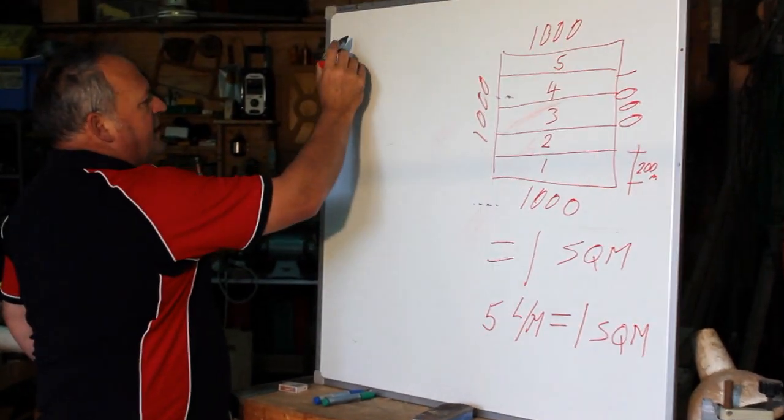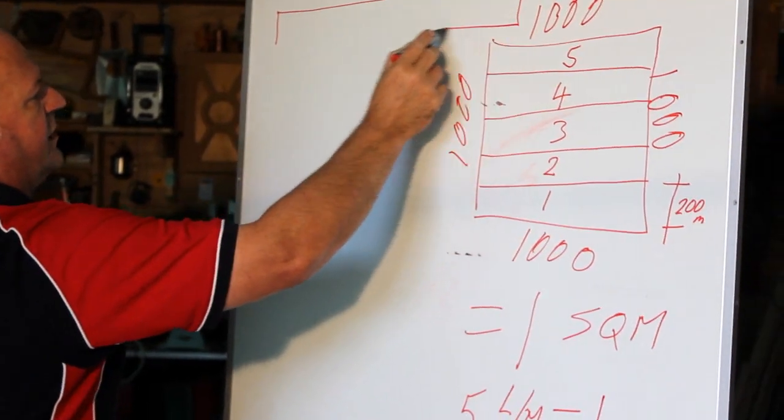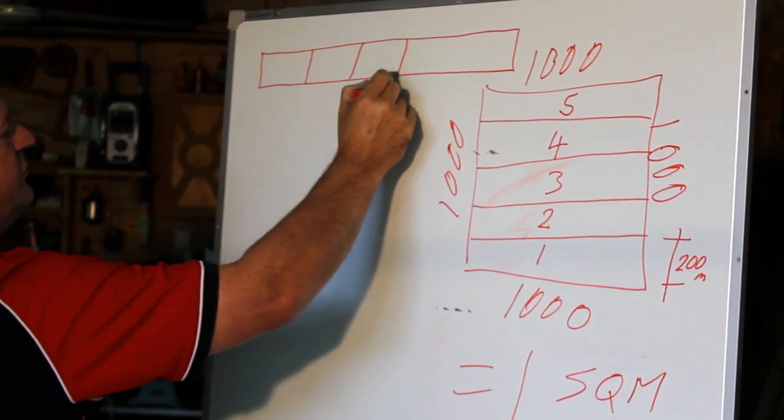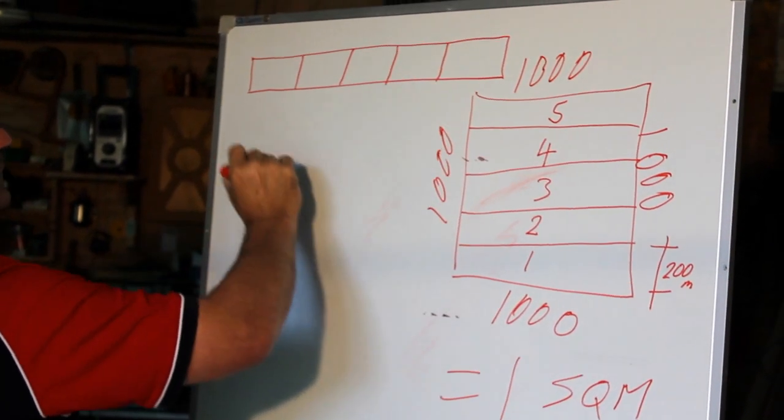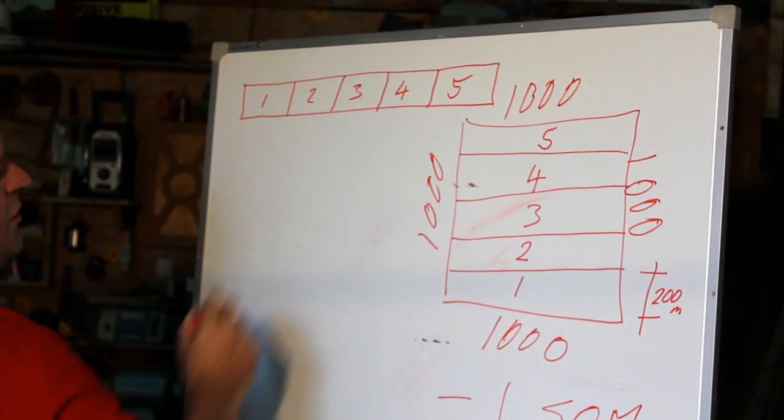So five lineal metres equals one square metre. So if I was to put that out, let's see if I can make it a little bit clearer. I'll come across here and I've got one, two, three, four, five.